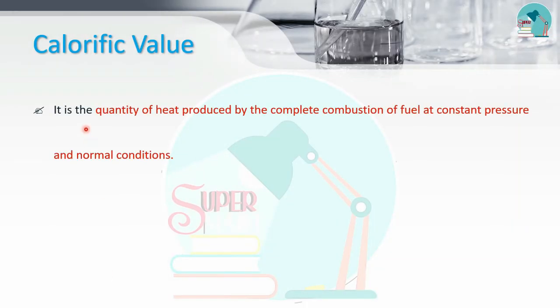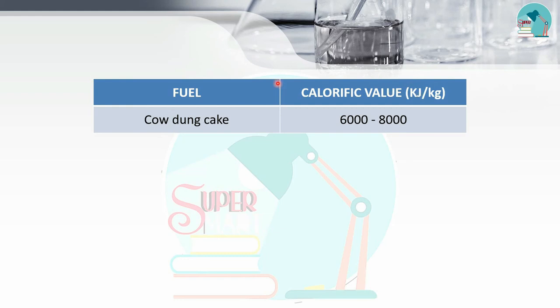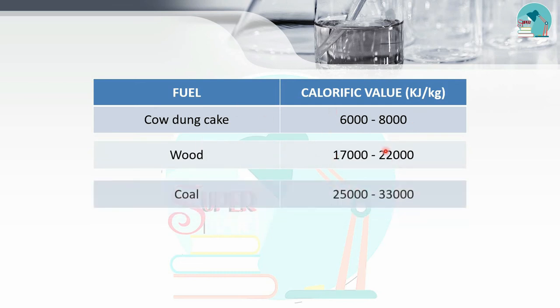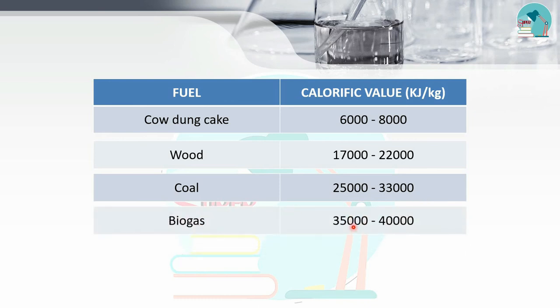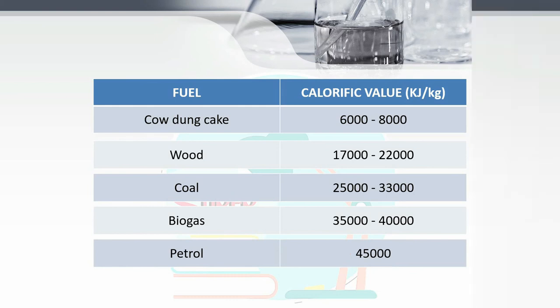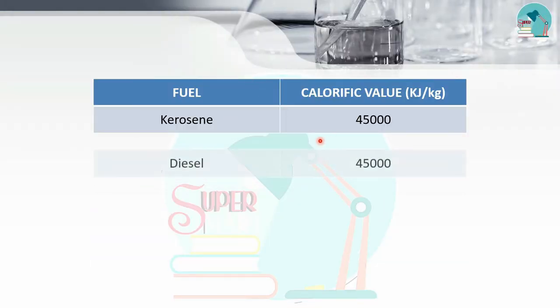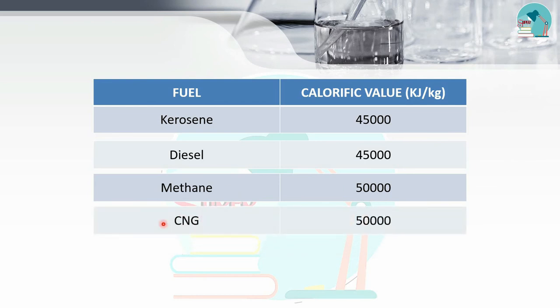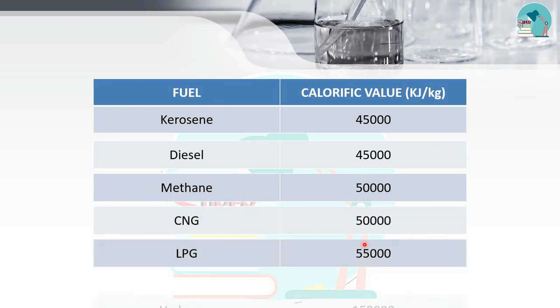Calorific value is the amount of heat produced by the complete combustion of a unit mass of fuel at constant pressure under normal conditions. The unit is joules per kilogram. Calorific values: cow dung cake 6,000–8,000; wood 17,000–22,000; coal 25,000–33,000; biogas 35,000–43,000; petrol 45,000; kerosene 45,000; diesel 45,000; methane 50,000; CNG 50,000; LPG 55,000; hydrogen 1,50,000 joules per kilogram.